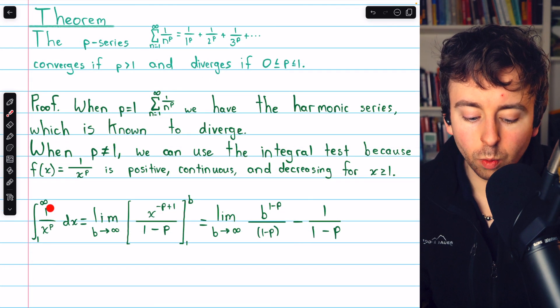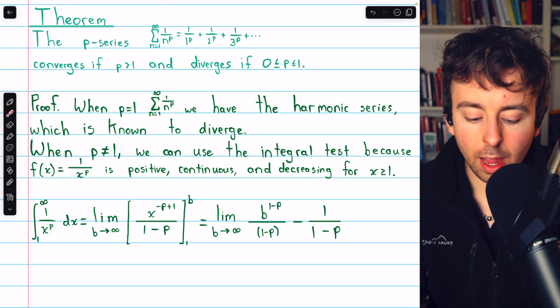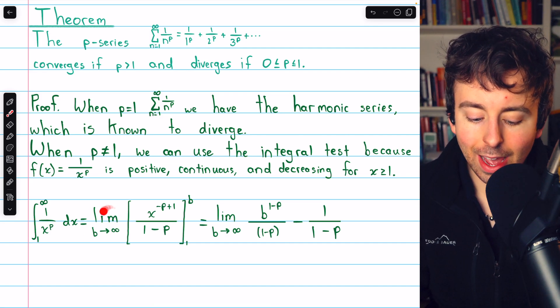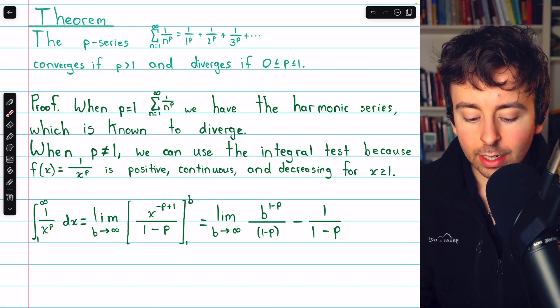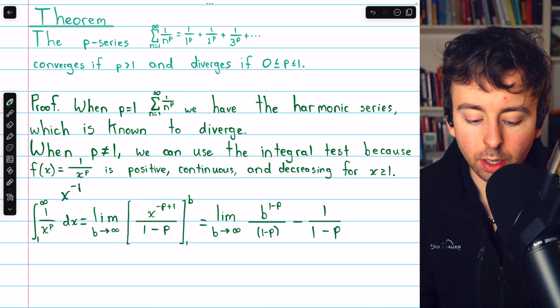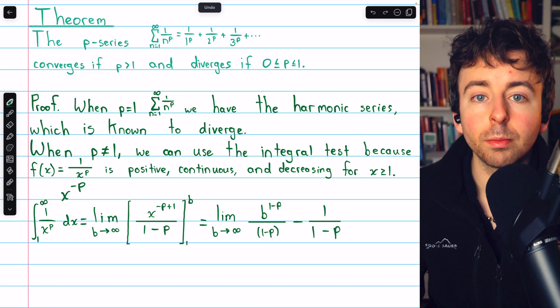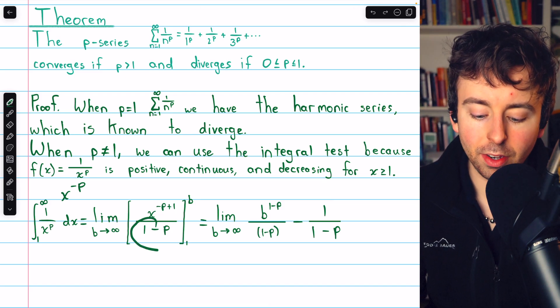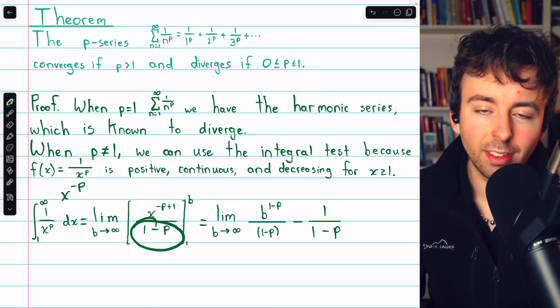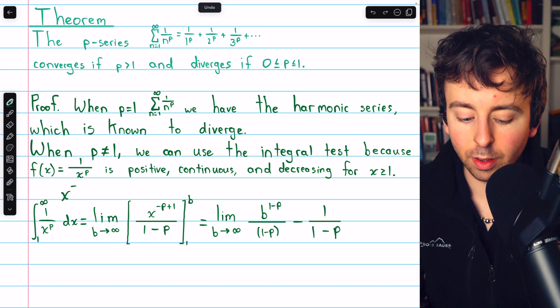So we integrate the function 1 over x to the p from 1 to infinity. This is the same as letting our bounds be 1 to b and taking the limit as b goes to infinity. Now, this 1 over x to the p is just x to the negative p, which is straightforward to integrate. Just increase the power by 1, so negative p plus 1, and then divide by the new power, that power of negative p plus 1, which is the same as 1 minus p. That's just reverse power rule.